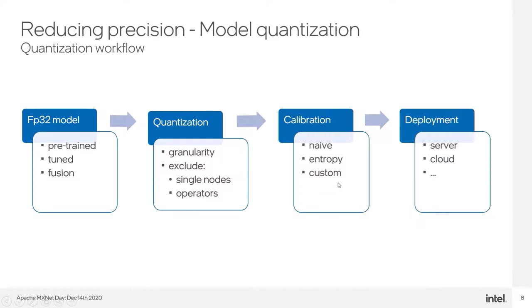And the third one is custom method, where user can pass his own calibration collector and calculate these thresholds in his own way. Finally, after all of that, we can deploy the optimized and quantized model to the server or cloud service like AWS.